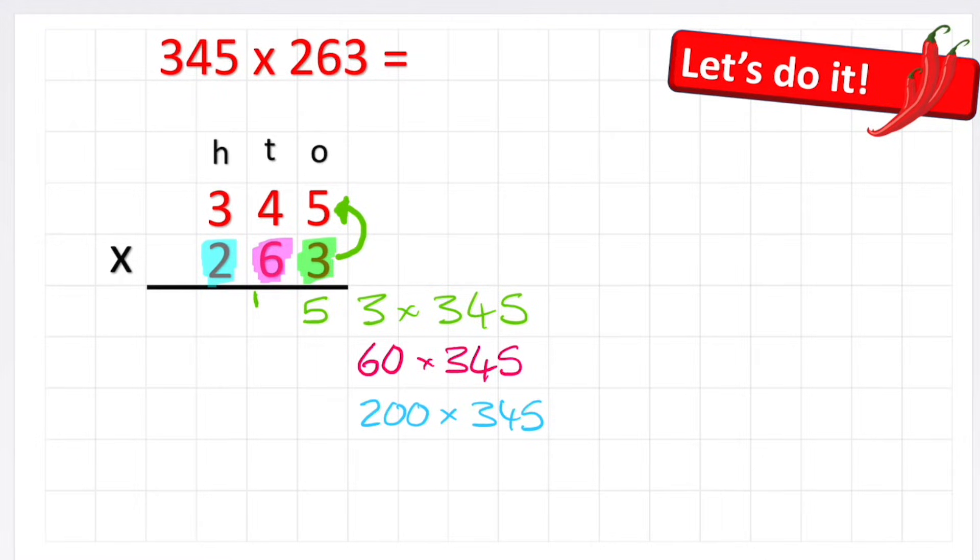Now I'm going to do 3 times 4, and 3 times 4 is 12, but I've got this little 1 to remember, so my answer is actually 13. And again, 13 consists of a little 1 and a big 3 in the tens column. Now, big tip at this point: cross out that 1 that we've already now used so that we don't add it up later. And finally for this row, I've got 3 multiplied by the 3, and 3 times 3 is 9, plus my 1 gives me 10.